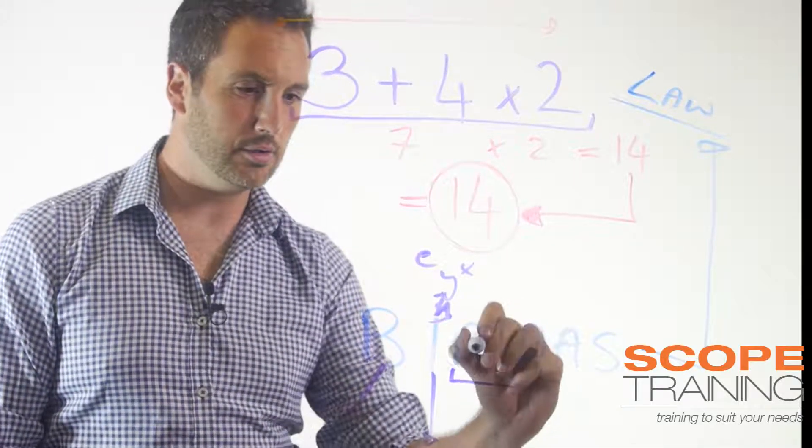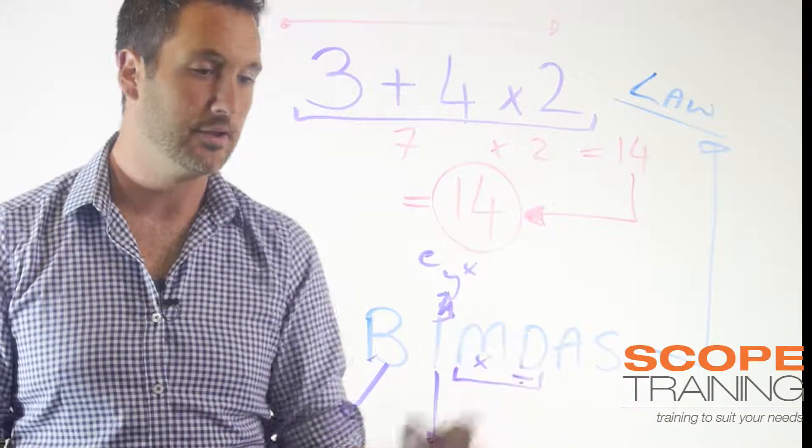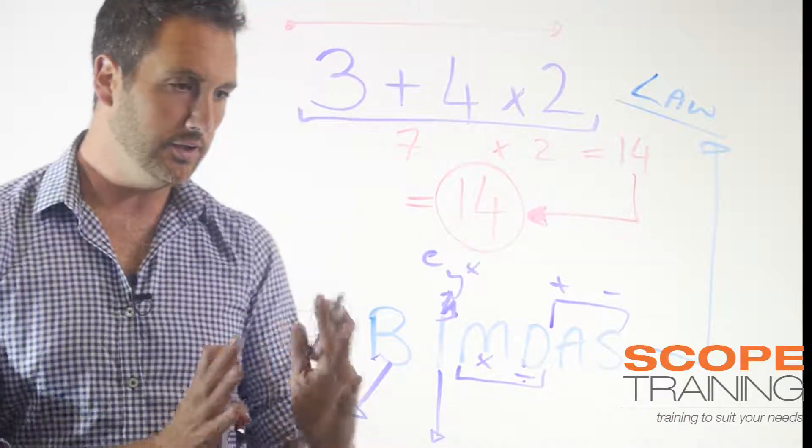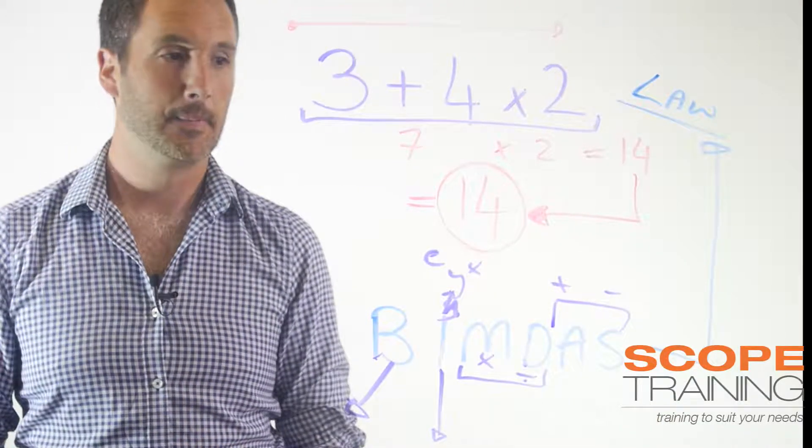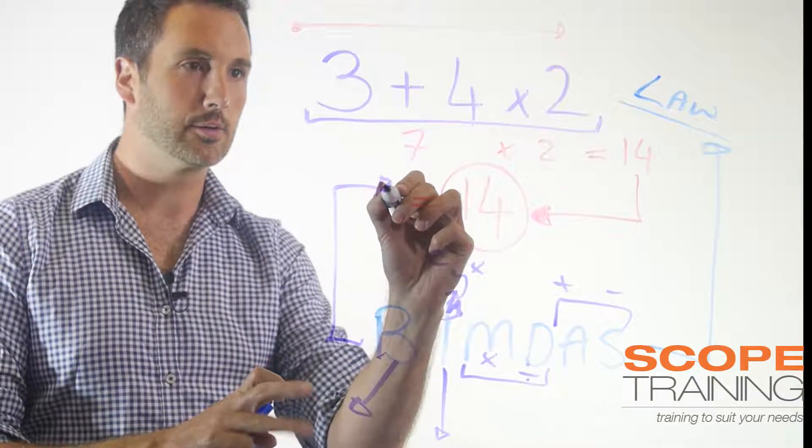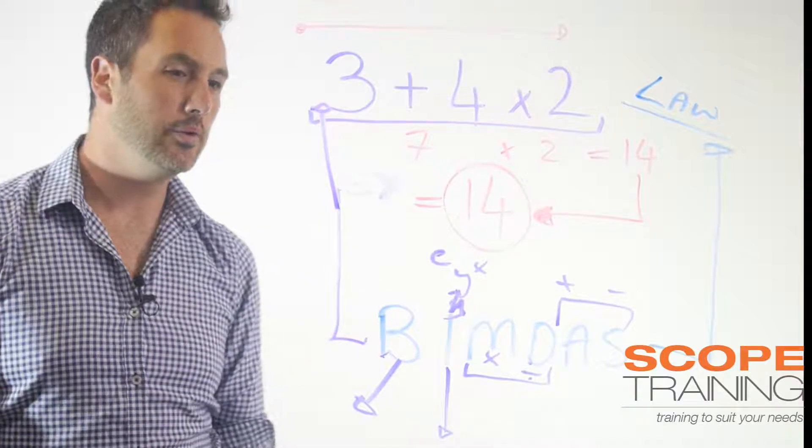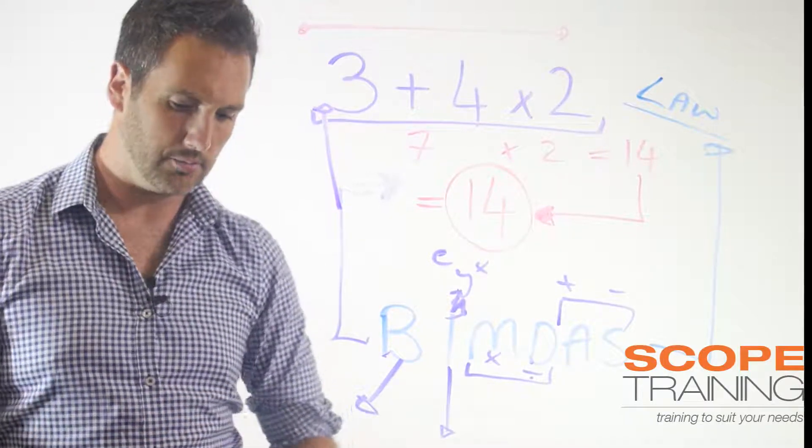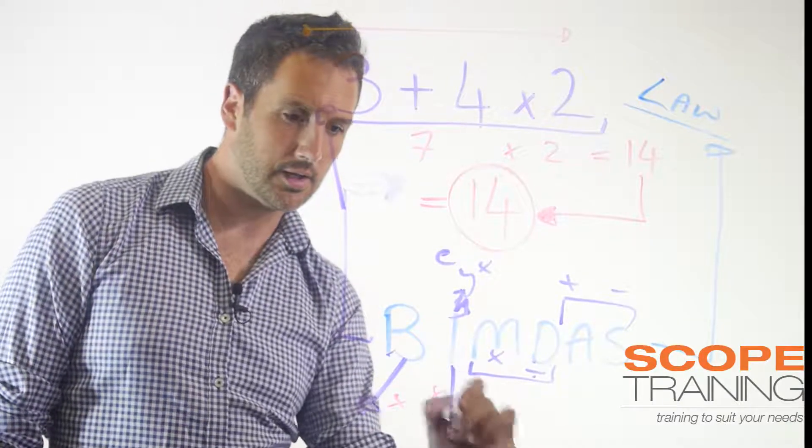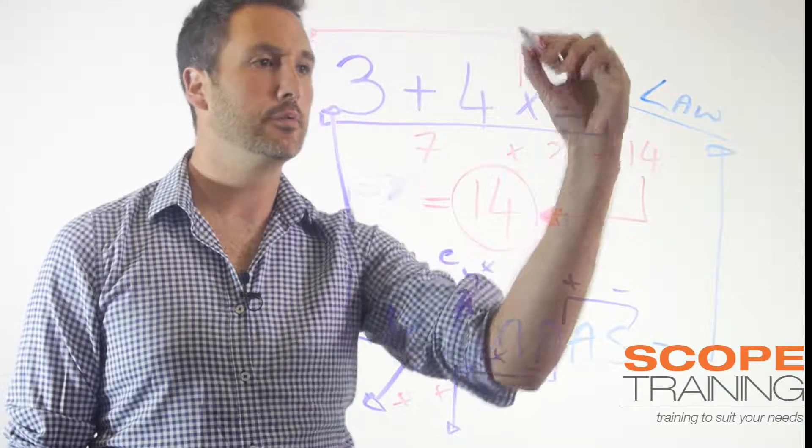Then you do your timesing and your dividing, so multiplication then division, and addition and subtraction. So that's the order which we do things in. If we then apply this BIMDAS thing to this question over here, what we do is we get something different because I'm like, cool, any brackets? Negative. Any indices? Negative. Multiplication? Okay, that comes next. So I go, okay, what is 4 × 2?